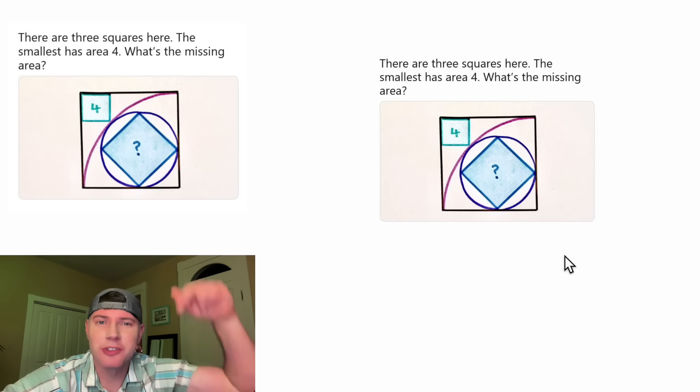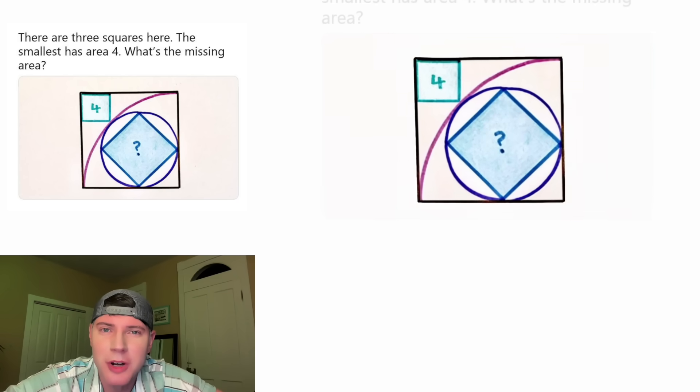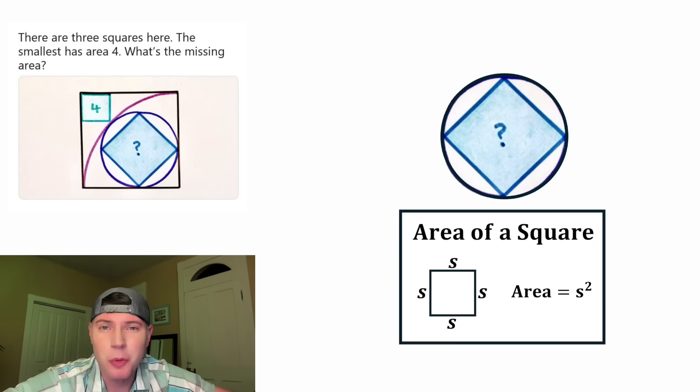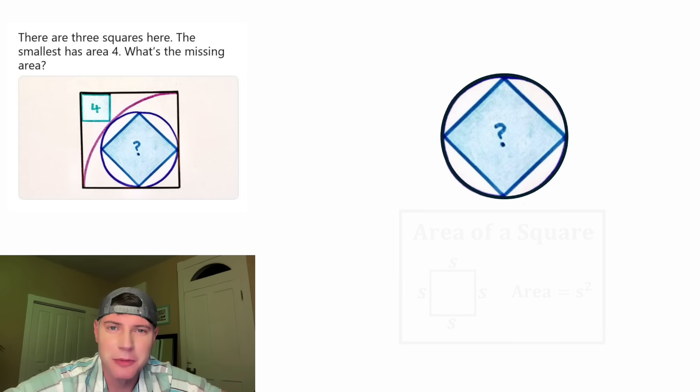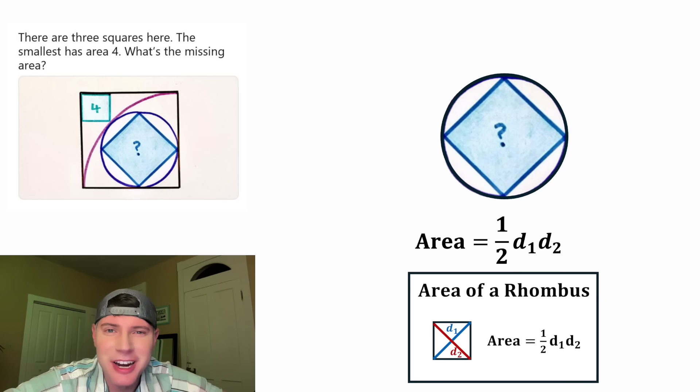If you want to try it on your own, pause it right now, because I'm going to solve it in three, two, one. First, let's focus on the square with the question mark. Typically for a square, we say the area is equal to the side length squared. I think it's going to be kind of tricky to find these side lengths. There is an alternative formula we can use. Every square is a rhombus, so we can use the area of a rhombus. A typical formula for the area of a rhombus is one half diagonal one times diagonal two. I think it's going to be a lot easier to work with the diagonals of this square, as opposed to the side lengths.